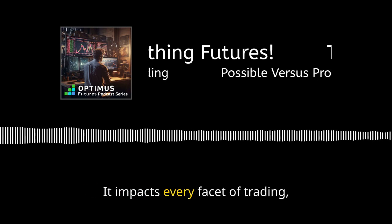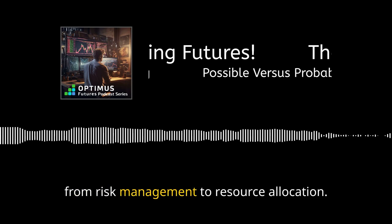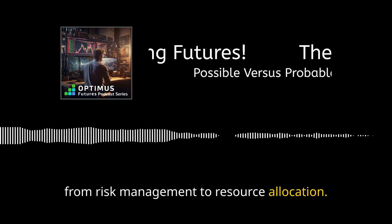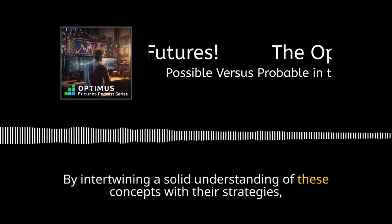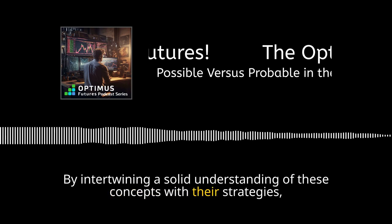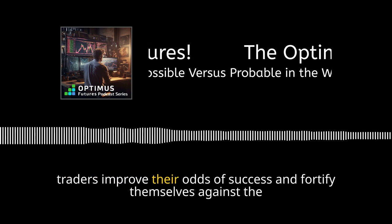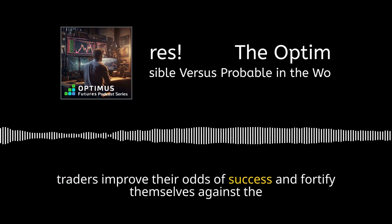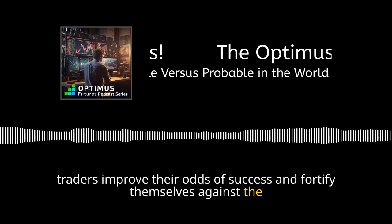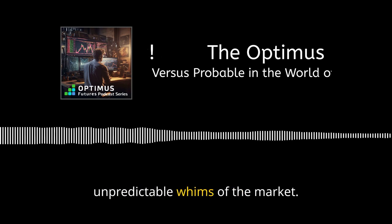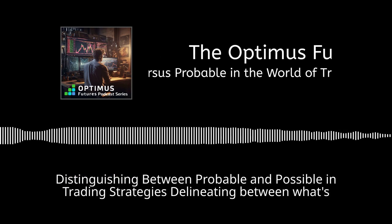The dance between probable and possible isn't merely theoretical — it impacts every facet of trading, from risk management to resource allocation. By intertwining a solid understanding of these concepts with their strategies, traders improve their odds of success and fortify themselves against the unpredictable whims of the market.